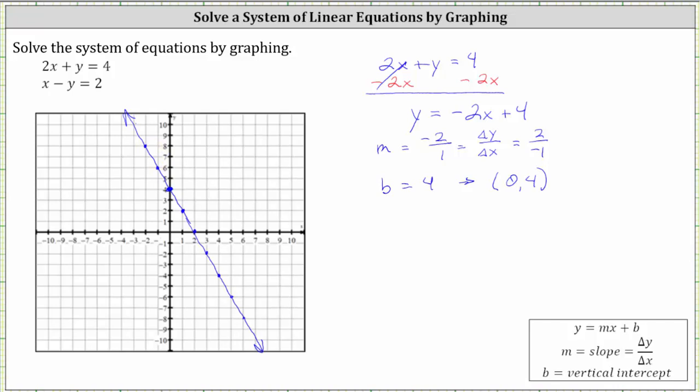And now let's graph the second line where x - y = 2. Now we could solve this for y, but since the left side is x - y, it'll be easier just to make a table of values to graph this line. We just need to pick x and y so that x - y equals two.